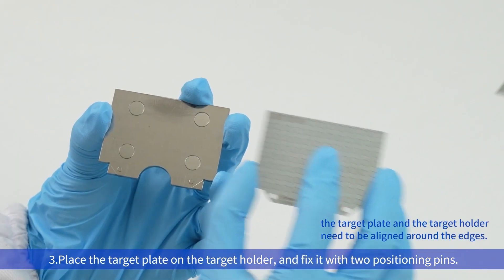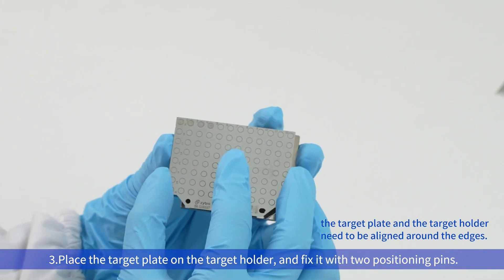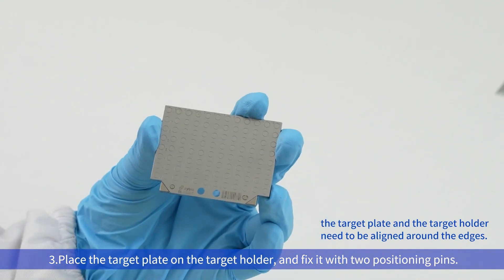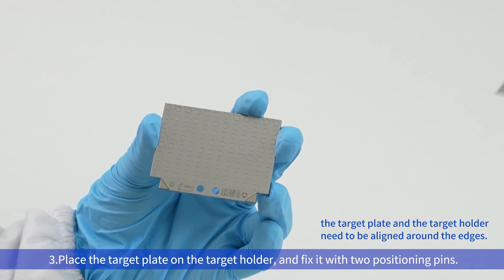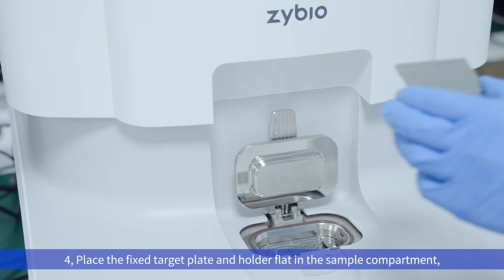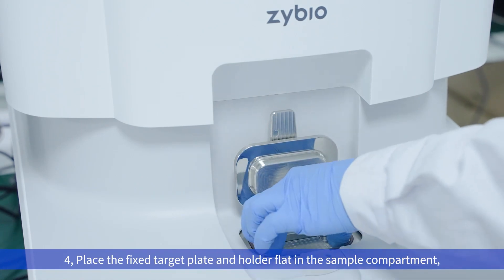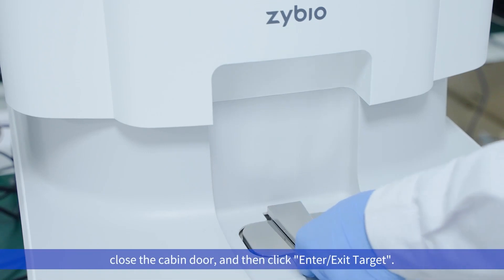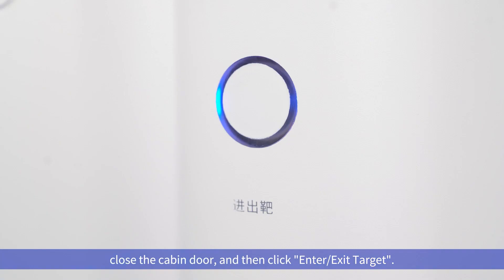Place the target plate on the target holder and fix it with two positioning pins. The target plate and the target holder need to be aligned around the edges. Fourth, place the fixed target plate and holder flat in the sample compartment. Fifth, close the cabin door and then click Enter-Exit target.